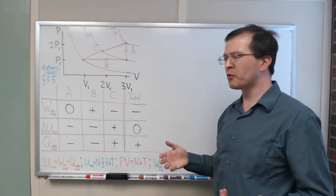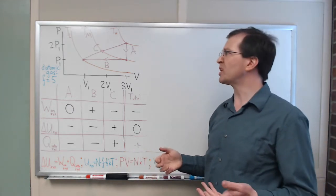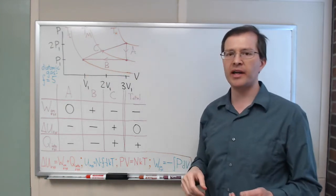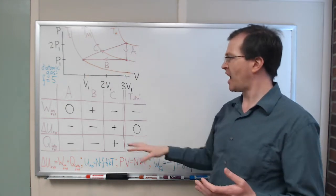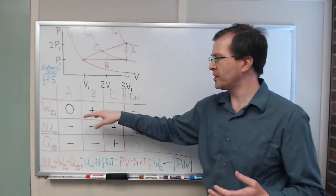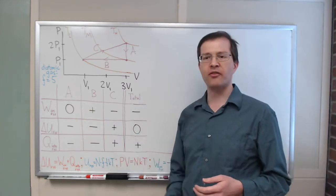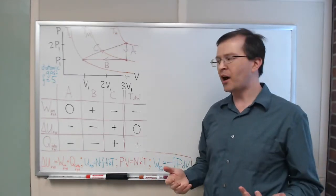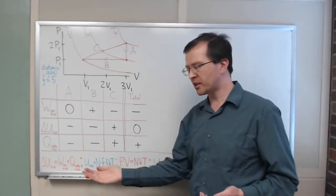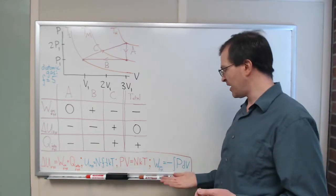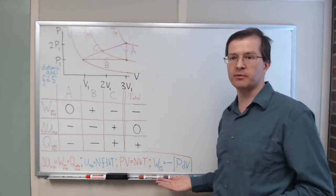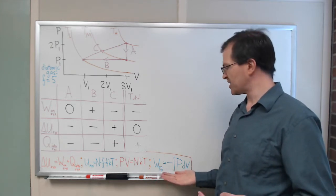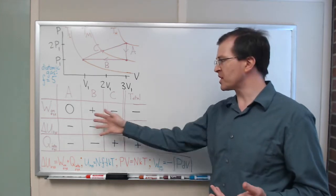We go through step A at constant volume, step B at constant pressure, and step C somehow arranging to go straight back up in the diagram to our initial point again. I went through a previous video going through conceptually the positives and negatives of each step, filling out the table of the three different energy terms that show up in the first law of thermodynamics.